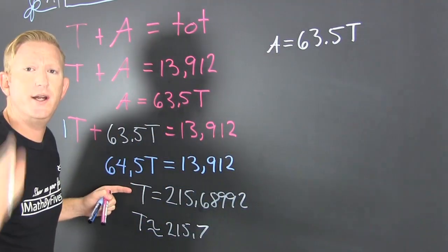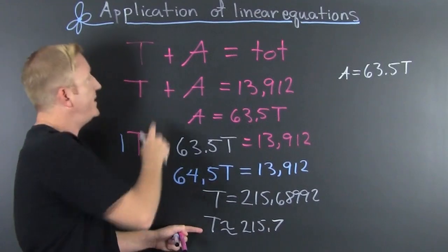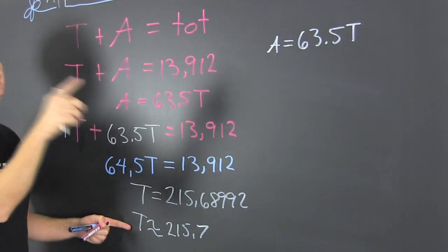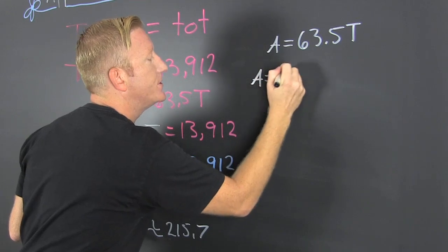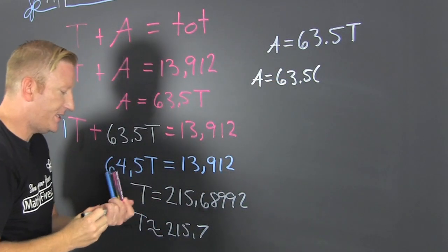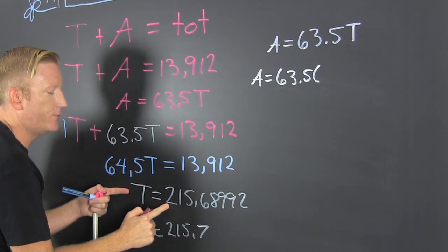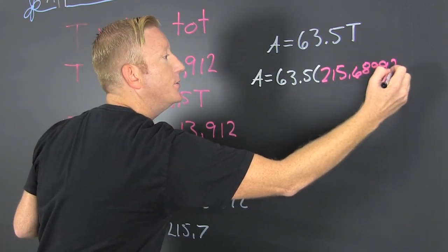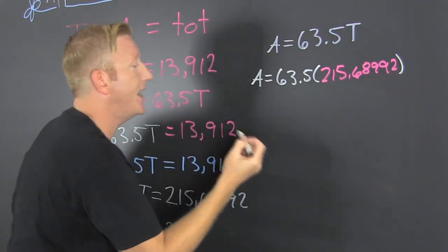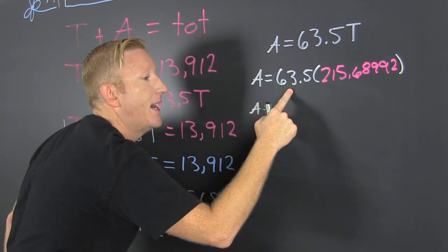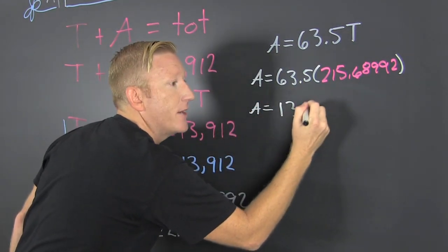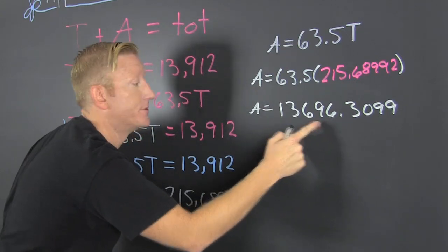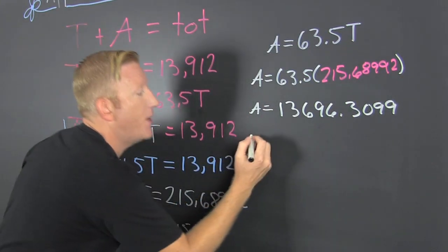We're going to go ahead and throw that up in T. What else could we have done? We could have also taken our found T and plugged it in here, and then subtracted it off to get our apples. But since we have this and it's all nice, I'm going to say A equals 63.5 times—what's my T value? Do I want to use this? No, I want to use my unrounded figure: 215.6899... So I throw that in there and I calculate and computate. When I do that, I get 13,696.309... and then I'm going to round that. So my apples are 13,696.3 pounds.